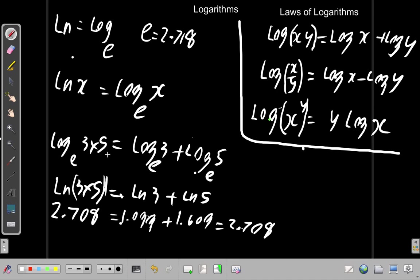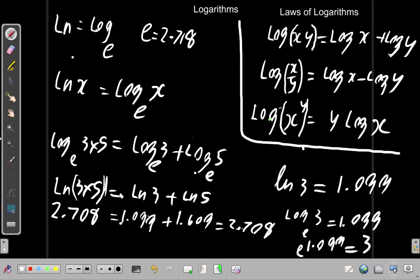Now here, when we found ln 3, what we get is 1.099. So we're saying the log with the base of e, the log of 3 is 1.099. Now what that means is e raised to the power of 1.099 equals 3. So if we take 2.718 to the power of 1.099, we get 3.